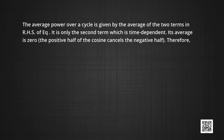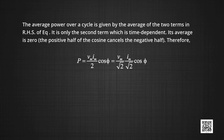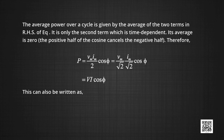The average power over a cycle is given by averaging the two terms on the right-hand side. Only the second term is time dependent, and its average is zero because the positive half of the cosine cancels with the negative half. Therefore, the average power is P = (V_m · I_m / 2) cos φ = (V_m / √2)(I_m / √2) cos φ = VI cos φ. This can also be written as P = I²Z cos φ, and since P = I²R, we can see that power is dissipated through resistance.